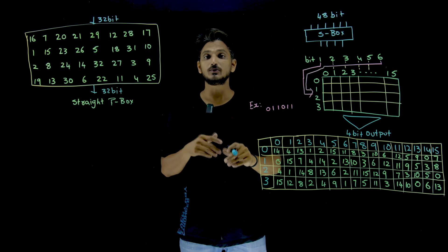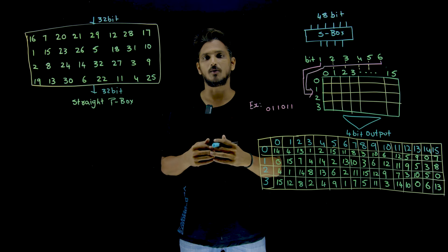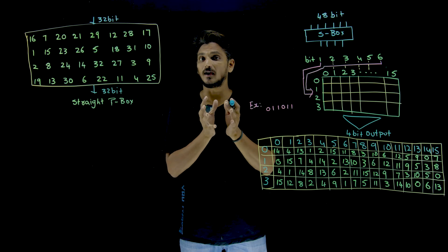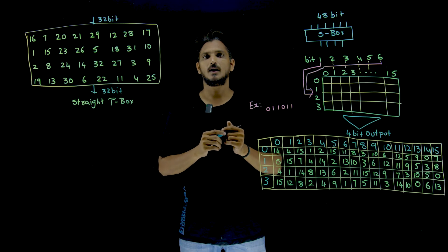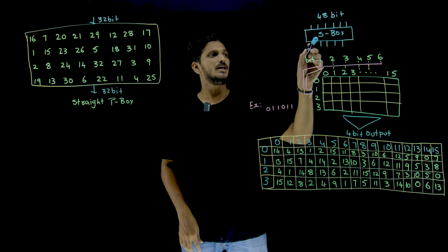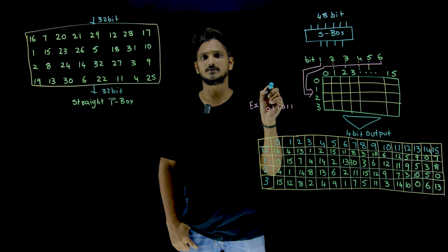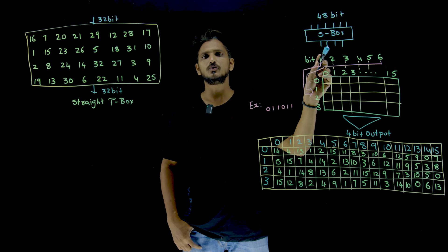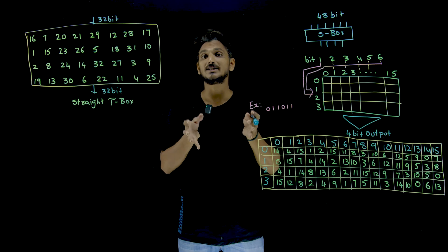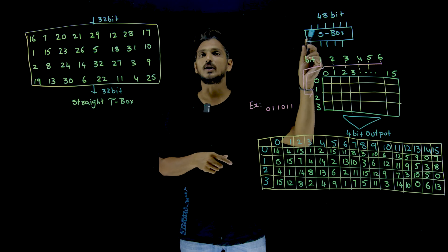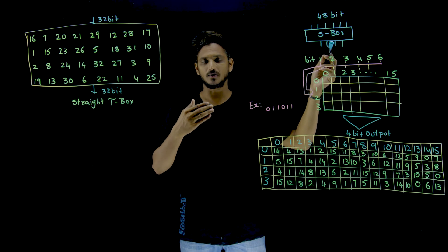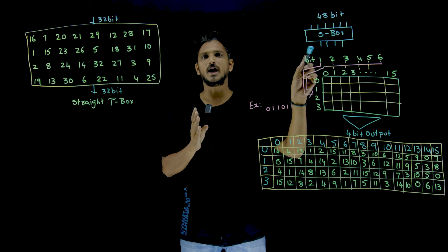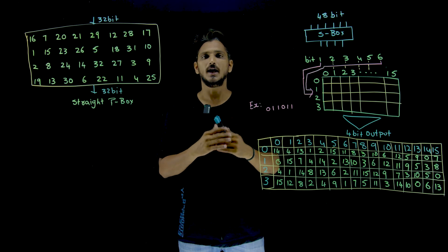The 48-bit input which we got from exclusive or operation is sent into the S-Boxes. The real mixing of bits happens here. We are having 8 S-Boxes. Each S-Box is going to take 6-bit as input and provide 4-bit as output — it is a compression S-Box. So 8 times 6 equals 48-bits are considered as 8 inputs for 8 S-Boxes. Each S-Box provides 4-bits as output, giving 8 times 4 equals 32-bit output in this stage.